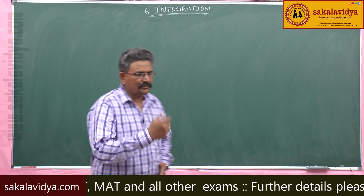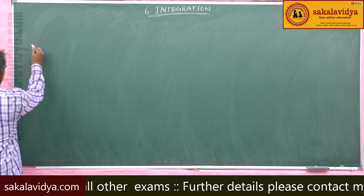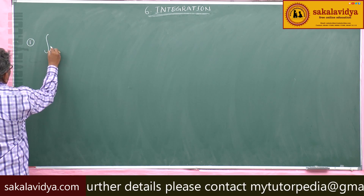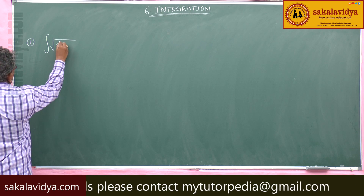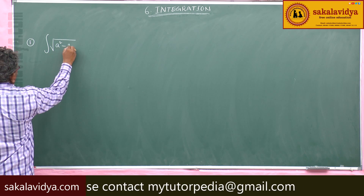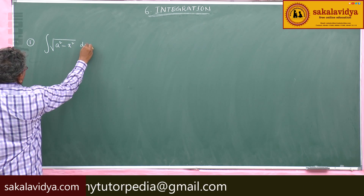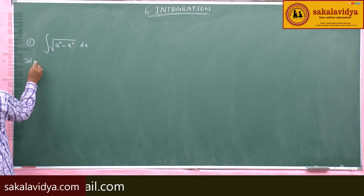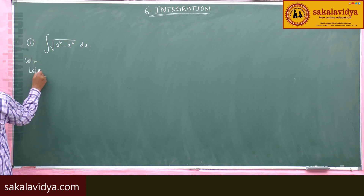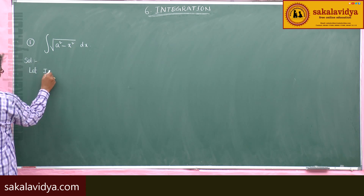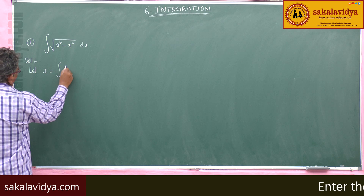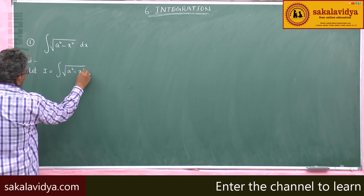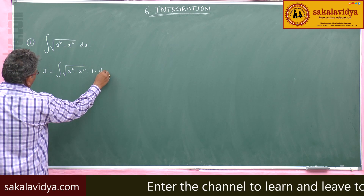Let us do the first one. So, ∫√(a²−x²)dx. Let this be i, equal to ∫√(a²−x²)·1 dx.